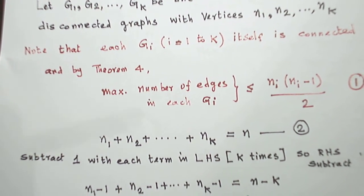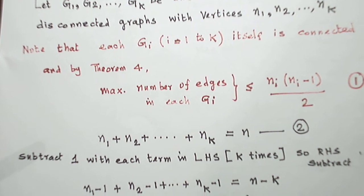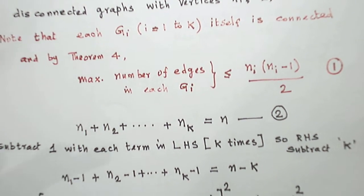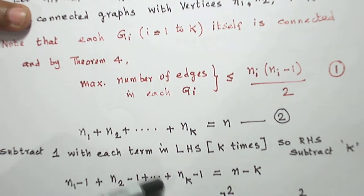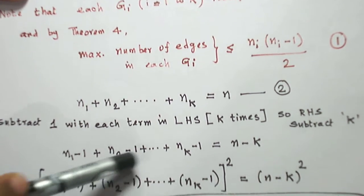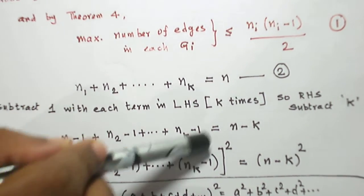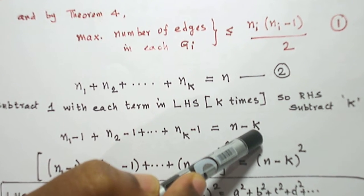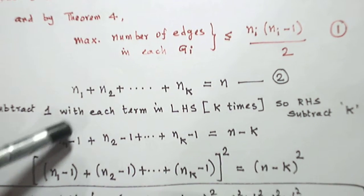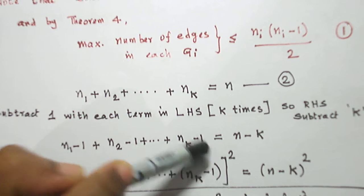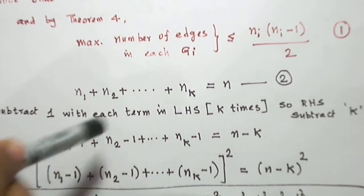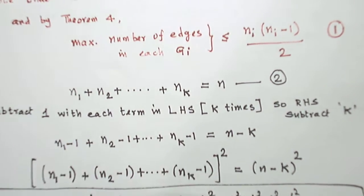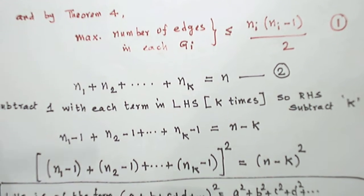Now I am going to do some arithmetic on the number of vertices, temporarily setting aside the main question of finding the number of edges. From each term, I subtract 1. On the left-hand side, I am subtracting 1 from each of the k terms, so I subtract k in total. To balance that, I subtract k on the right-hand side as well, giving: (n1-1) + (n2-1) + ... + (nk-1) = n - k.